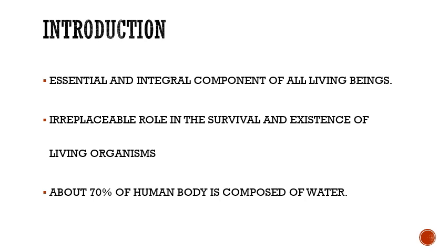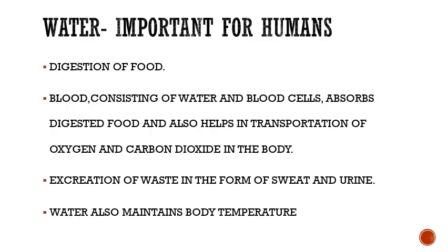About 70% of the human body is composed of water. Water is important for humans in the following ways. Digestion of food in the stomach takes place with the help of water. Blood, consisting of water and blood cells, absorbs digested food and also helps in transportation of oxygen and carbon dioxide in the body.